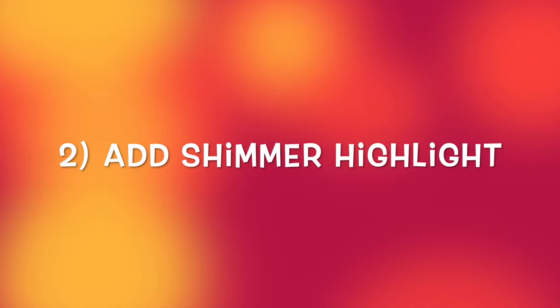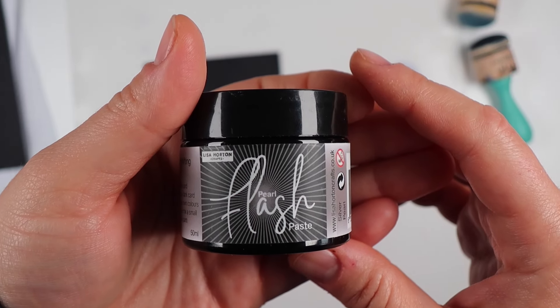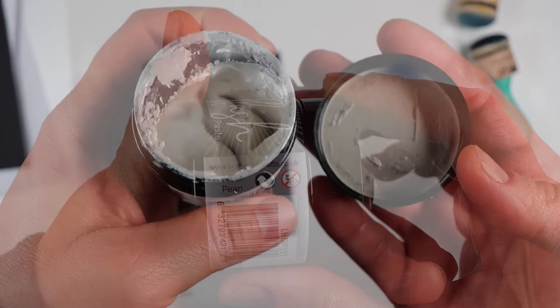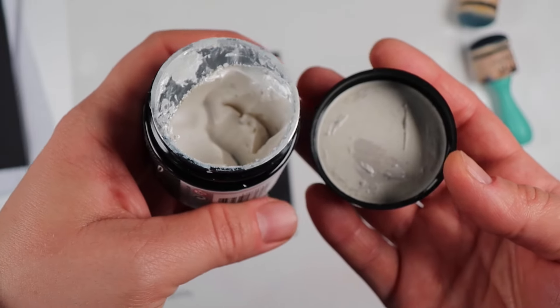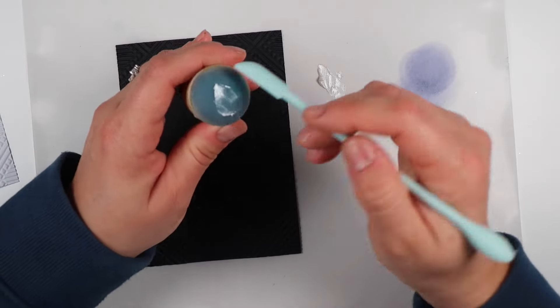Another way to jazz up our embossing folder look is to use a paste. I have this pearlescent paste from Lisa Horton Crafts. Any paste will do if it's got a bit of shine and shimmer to it. The nice thing about using pastes that have mica powder in them is that you can apply them to dark cardstock.